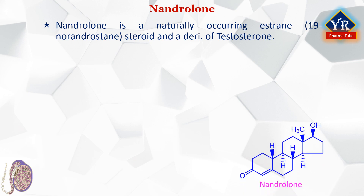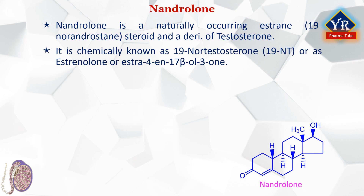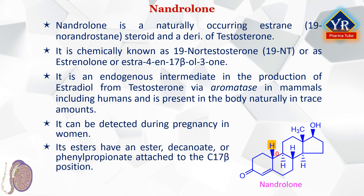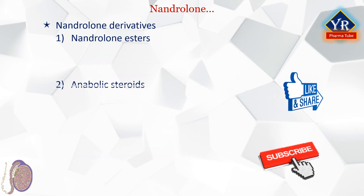Nandrolone is a naturally occurring estrane, that is a 19-norandrostane steroid and a derivative of testosterone. It is chemically known as 19-nortestosterone, abbreviated as 19-NT, or as estrenolone as well as estr-4-en-17-beta-ol-3-one. It is specifically the C10-demethylated, that is nor-analog of testosterone, which means nandrolone does not contain a methyl group at C10 position. Nandrolone is an endogenous intermediate in the production of estradiol from testosterone via aromatase in mammals including humans, and is present in the body naturally in trace amounts. It can be detected during pregnancy in women. Nandrolone esters have an ester such as decanoate or phenylpropionate attached at the C17-beta position. Nandrolone derivatives include nandrolone esters, anabolic steroids, and progestins.